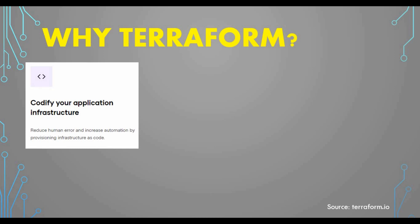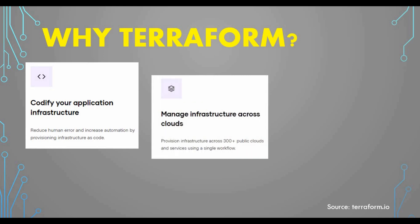DevOps is overall a change of culture — breaking the barriers between development and operations teams. You automate more stuff and reduce barriers. For deploying your application to infrastructure, you use Terraform by codifying your infrastructure and keeping a configuration file, which reduces human errors and increases automation. Also, you can manage infrastructure across different cloud platforms — Terraform is not limited to just Microsoft Azure, AWS, or Google Cloud.